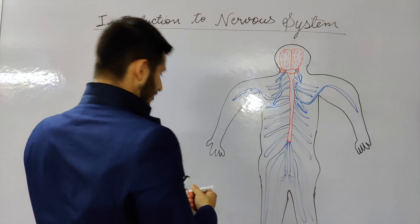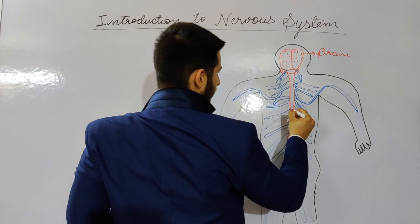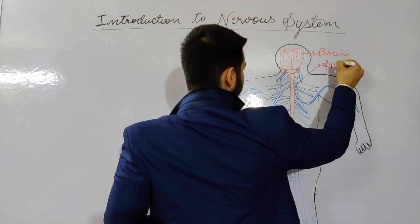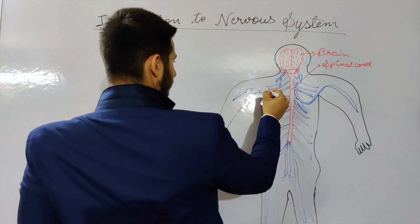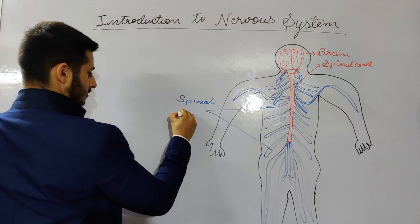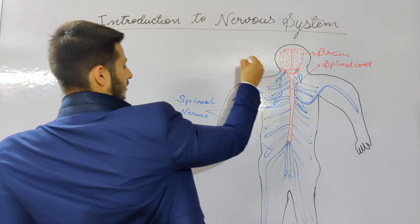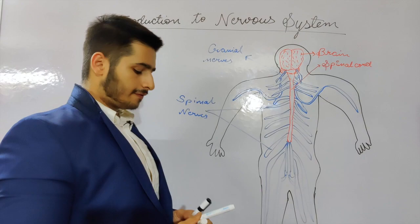Introduction to the nervous system. This is a human body, and this is the brain. This is the spinal cord. These are spinal nerves. And these are cranial nerves — they arise from the cranium.